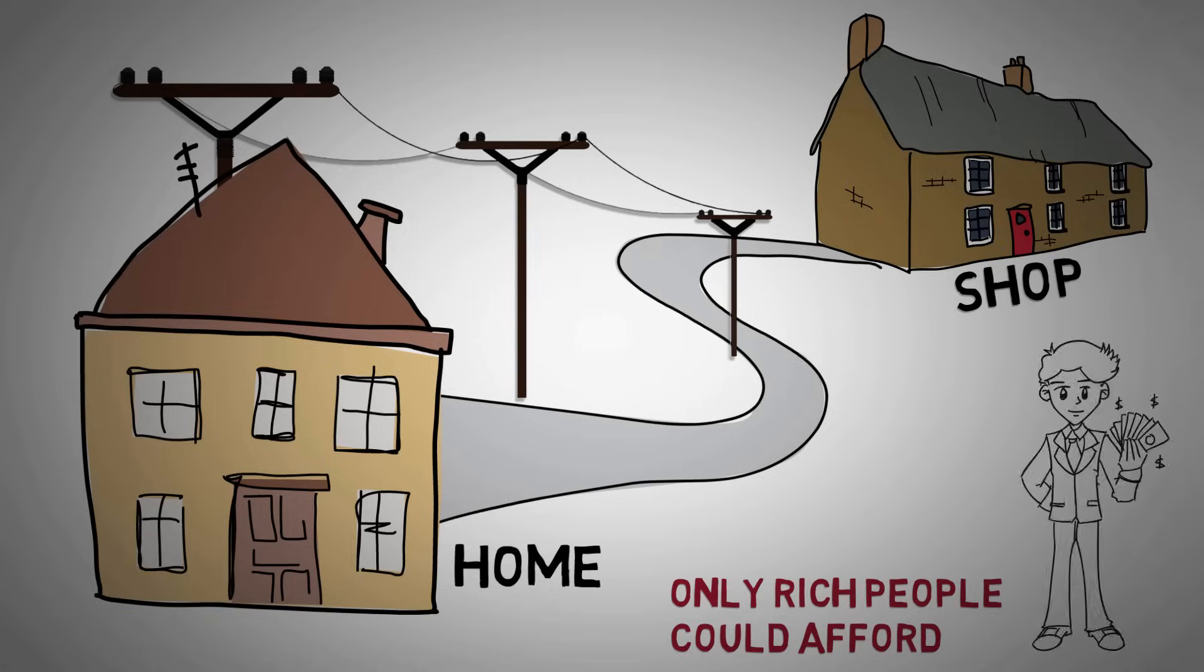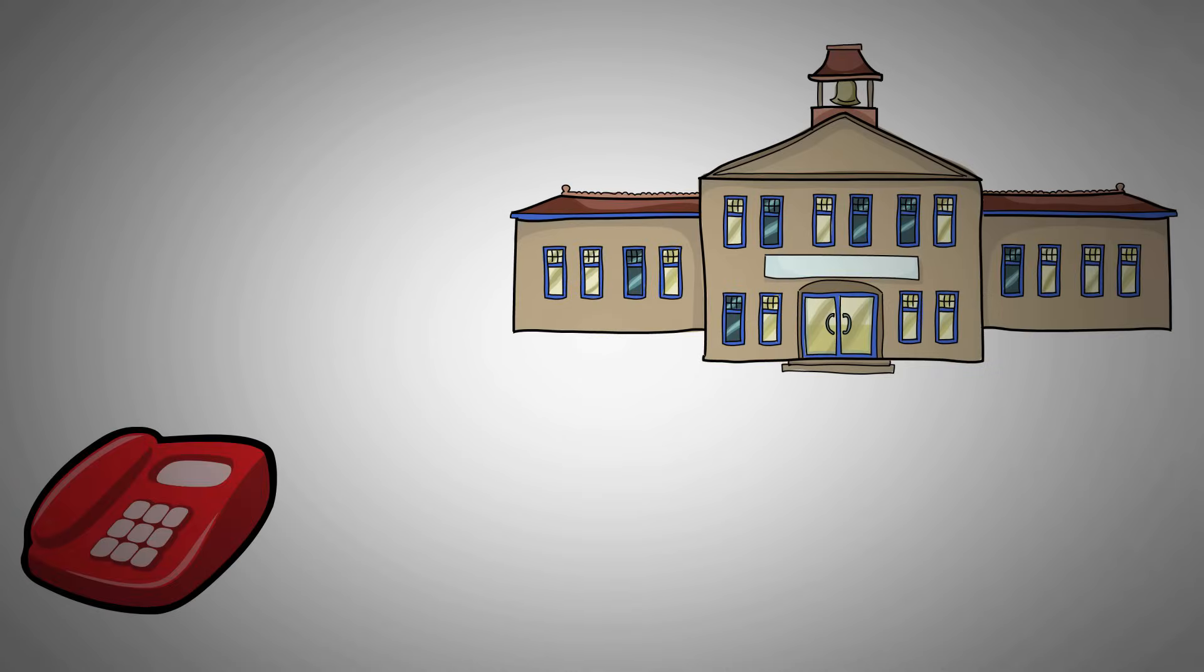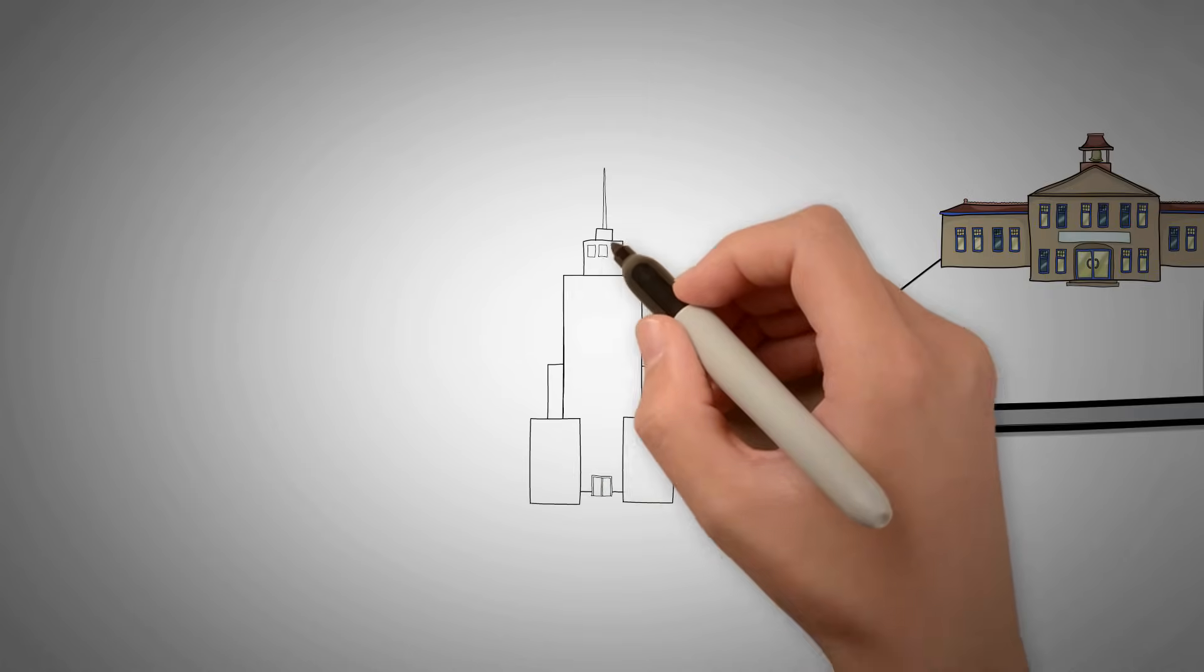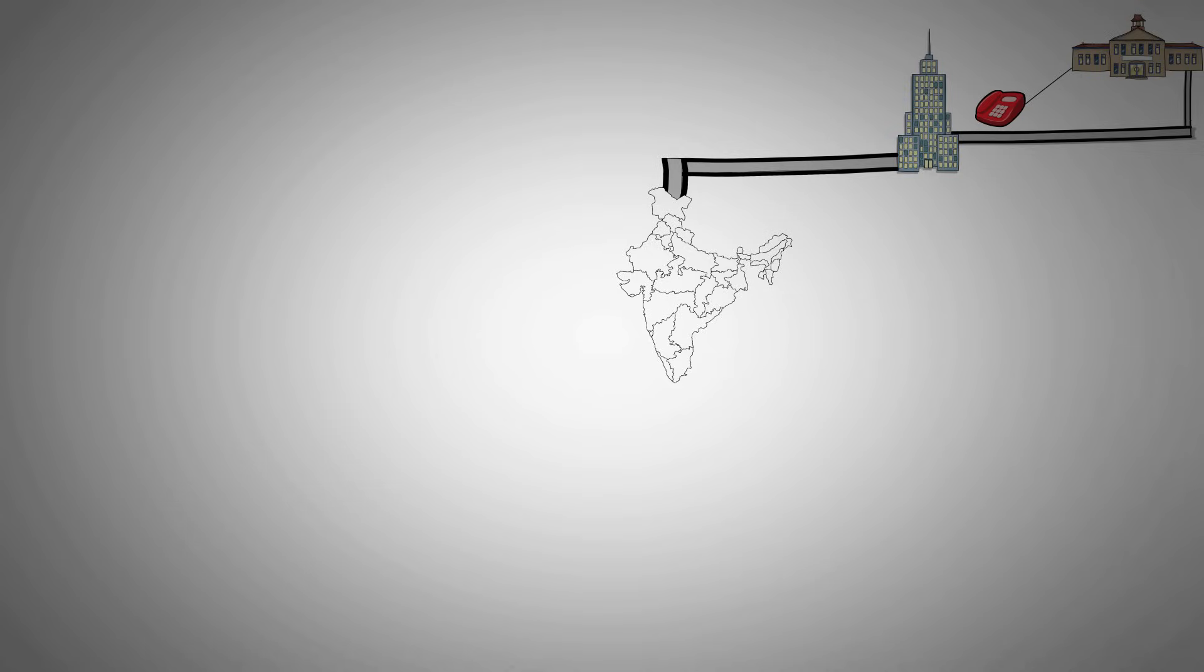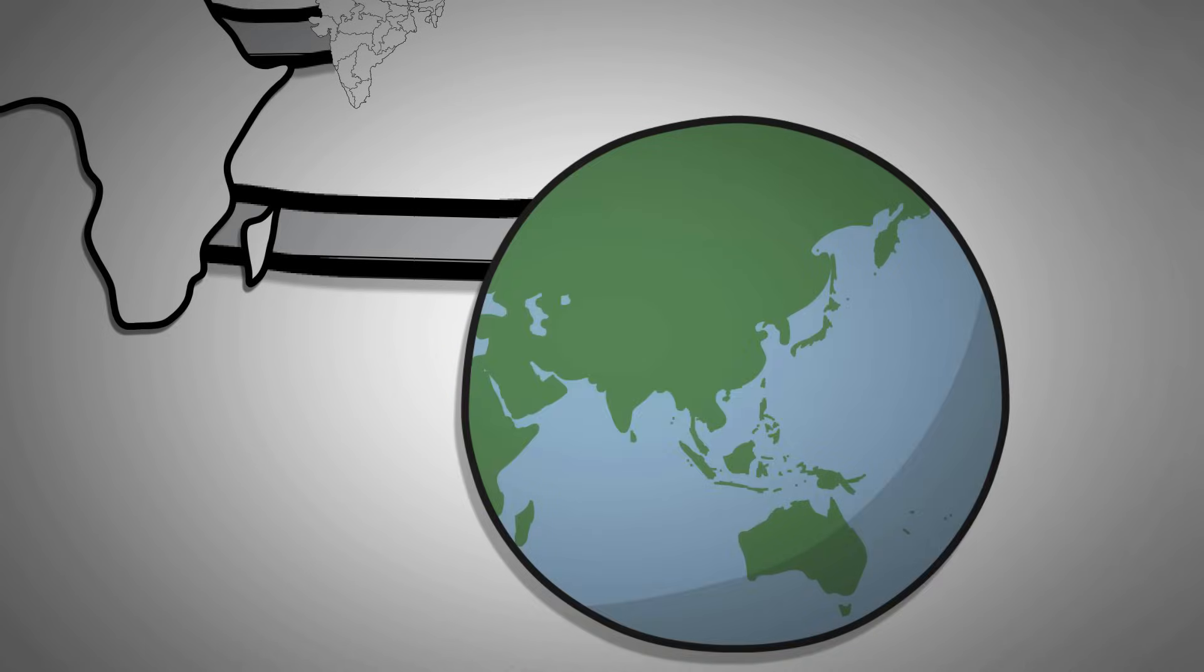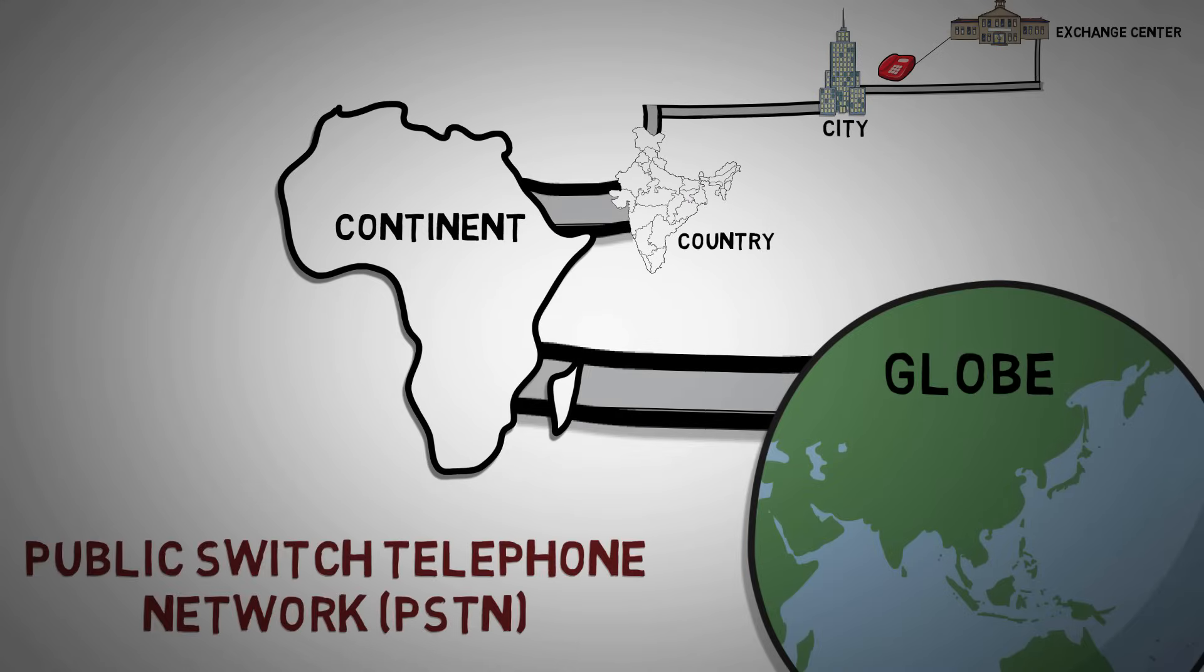Later telephones took advantage of the exchange principle already employed in telegraph networks. Each telephone was wired to a local telephone exchange, and the exchanges were wired together with trunks. Networks were connected in a hierarchical manner until they spanned cities, countries, continents and oceans. This was the beginning of the public switched telephone network or PSTN. The major progress took place after the second world war.